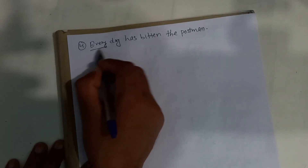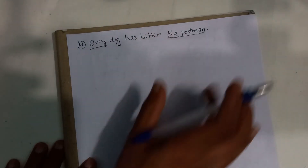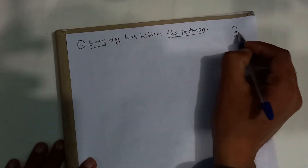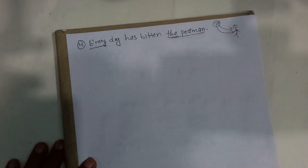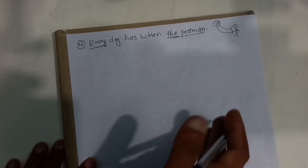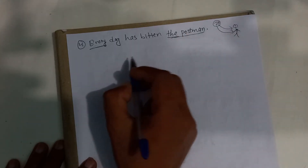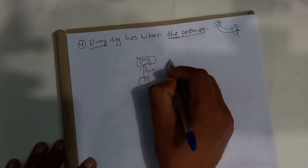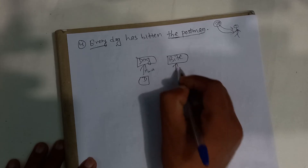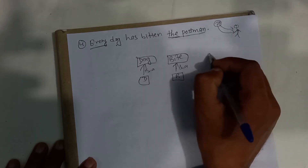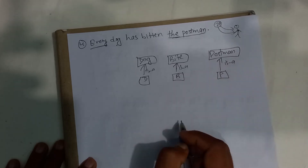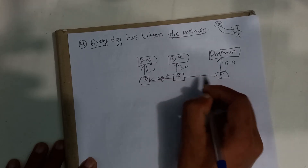This is our last question. Every dog has bitten the postman. Here, by saying 'the postman,' I am referring to a particular postman. This is different from 'a postman.' The basic structure: dog class, instance, and the postman is a specific individual. We make the dog the agent and the postman the victim.